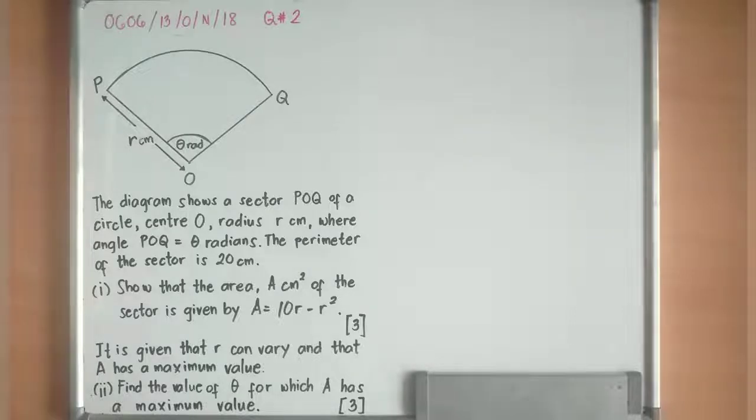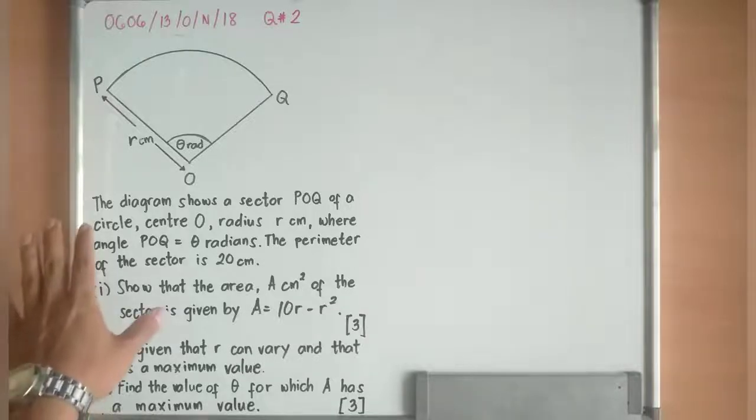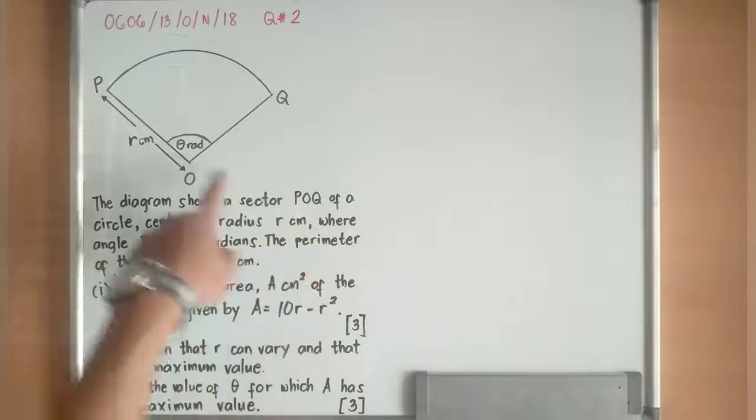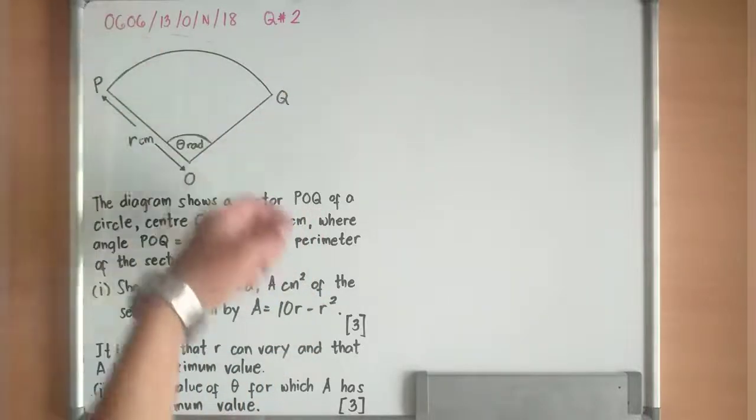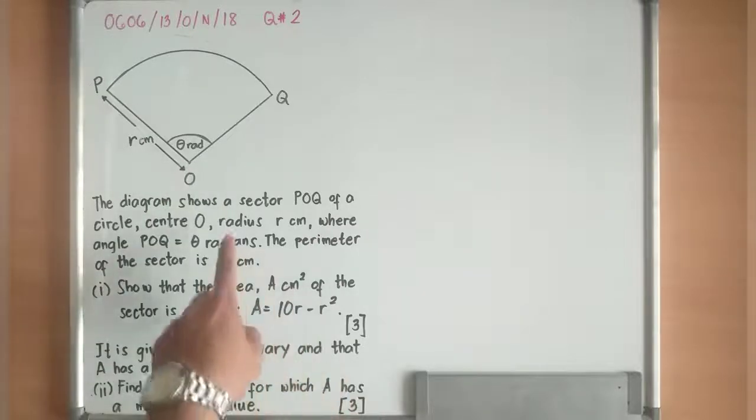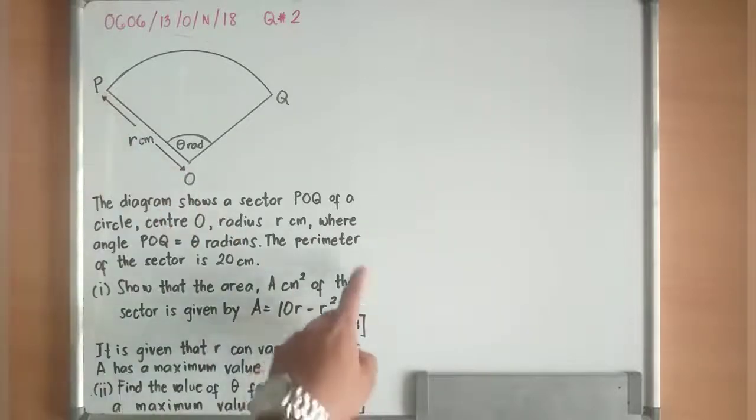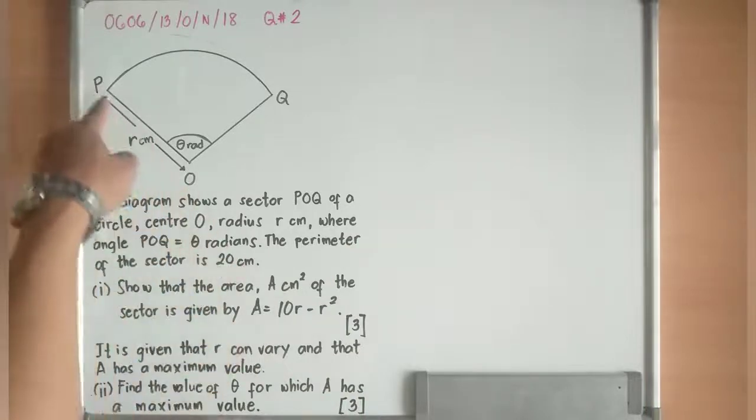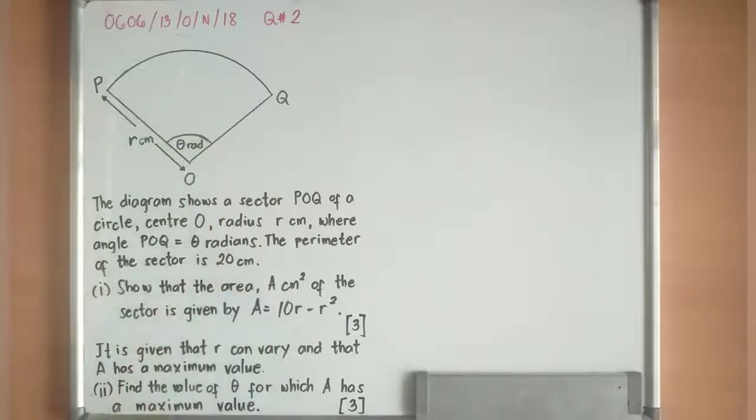This question is about circular measure and perimeter of a sector. The diagram shows sector POQ, a sector of a circle with center O and radius R, where angle POQ is θ radians.